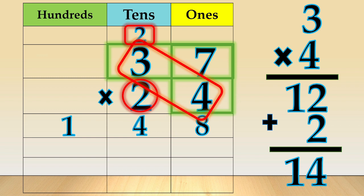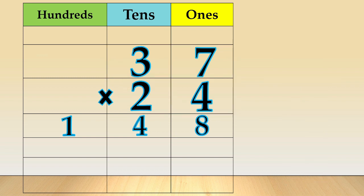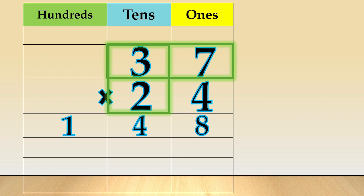Next, we multiply by the tens place. We are going to multiply 37 times 2. We are going to put a 0 to hold the ones place. That's because 2 is not really a 2 — it is a 20. So, by adding the 0, we can keep its value.